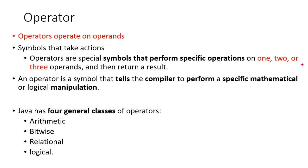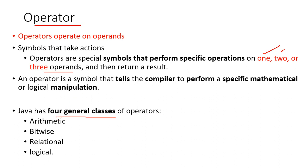The operator operates on operands. There can be one, two, or three operands. Whenever you use an operator, you are telling the compiler to do some sort of calculation — mathematical, logical, assignment, or anything. In Java, there are four general classes of operators: arithmetic, bitwise, relational, and logical.